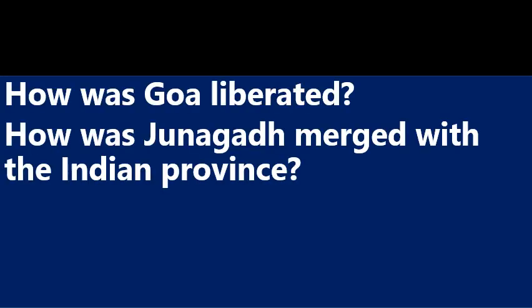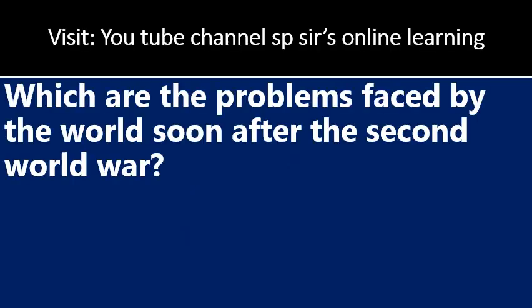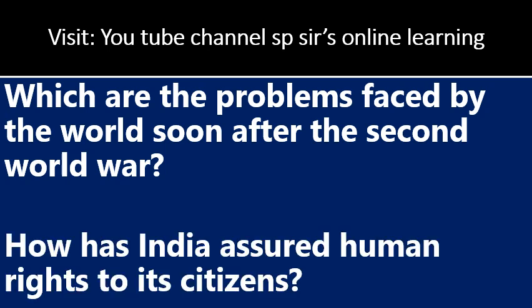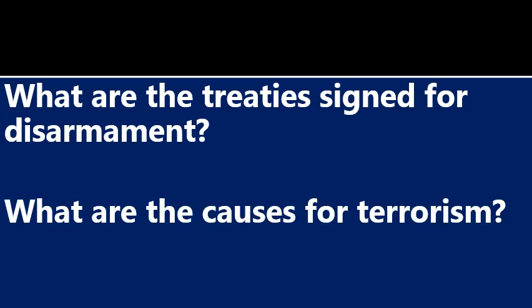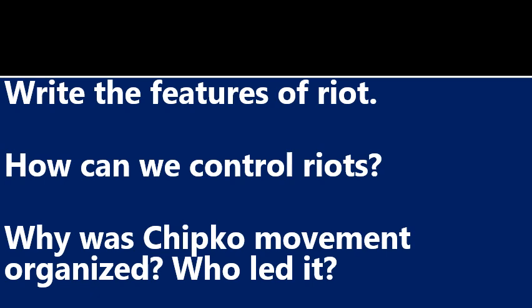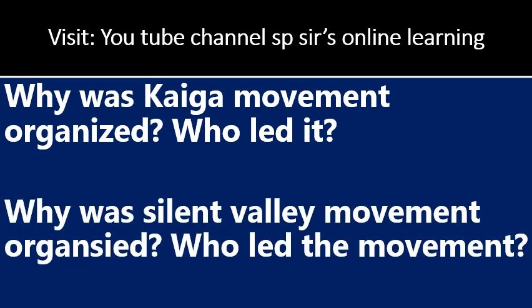How was Goa liberated? How was Junagadh merged with the Indian province? Which are the problems faced by the world soon after the World Wars? How has India issued human rights to its citizens? What are the treaties signed for disarmament? What are the causes for terrorism? Write the features of riots and how we can control them. Why was the Chipko Movement organized and who led it? Why was the Ganga Movement organized and who led it? Why was the Silent Valley Movement organized and who led it?